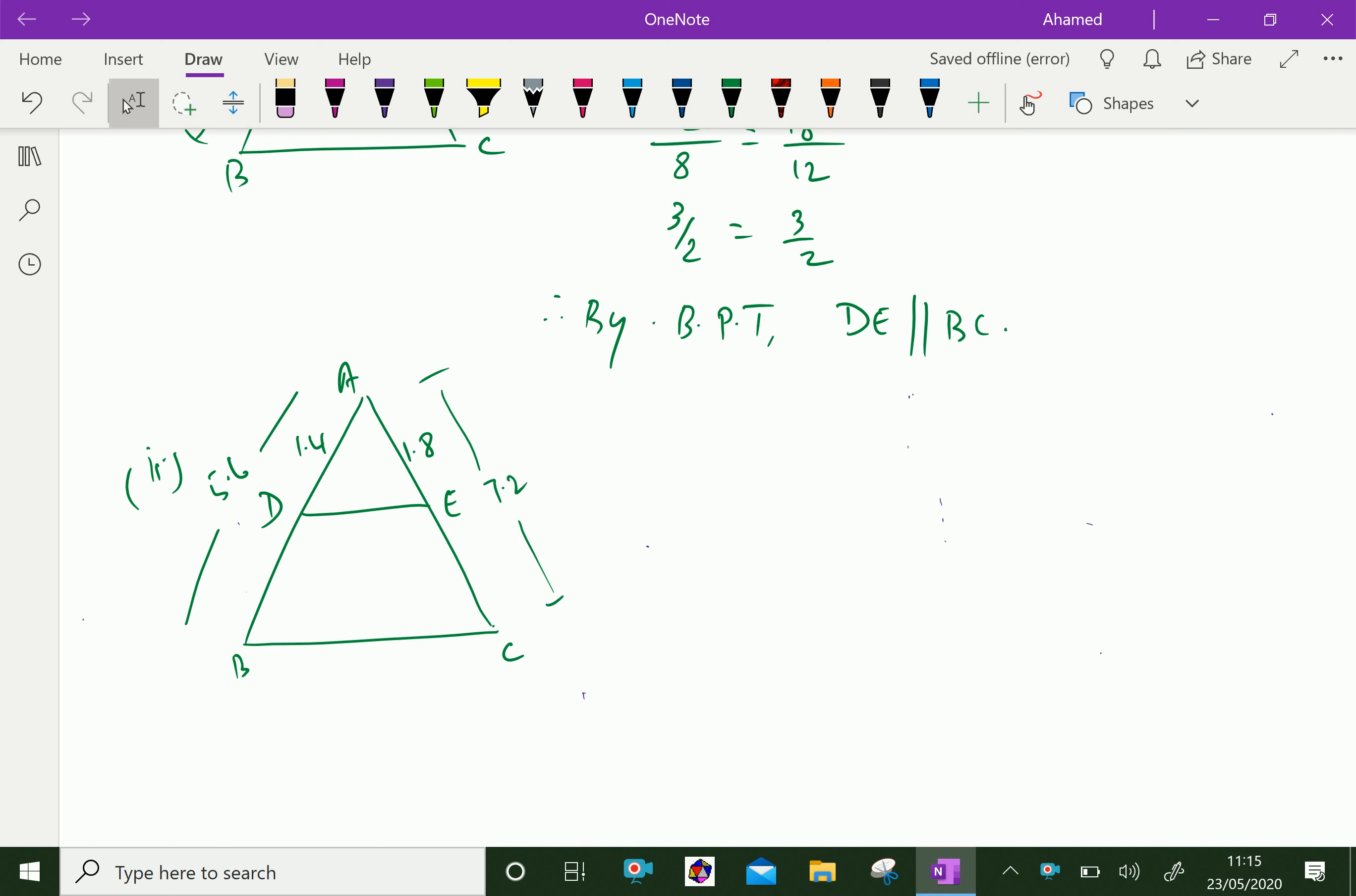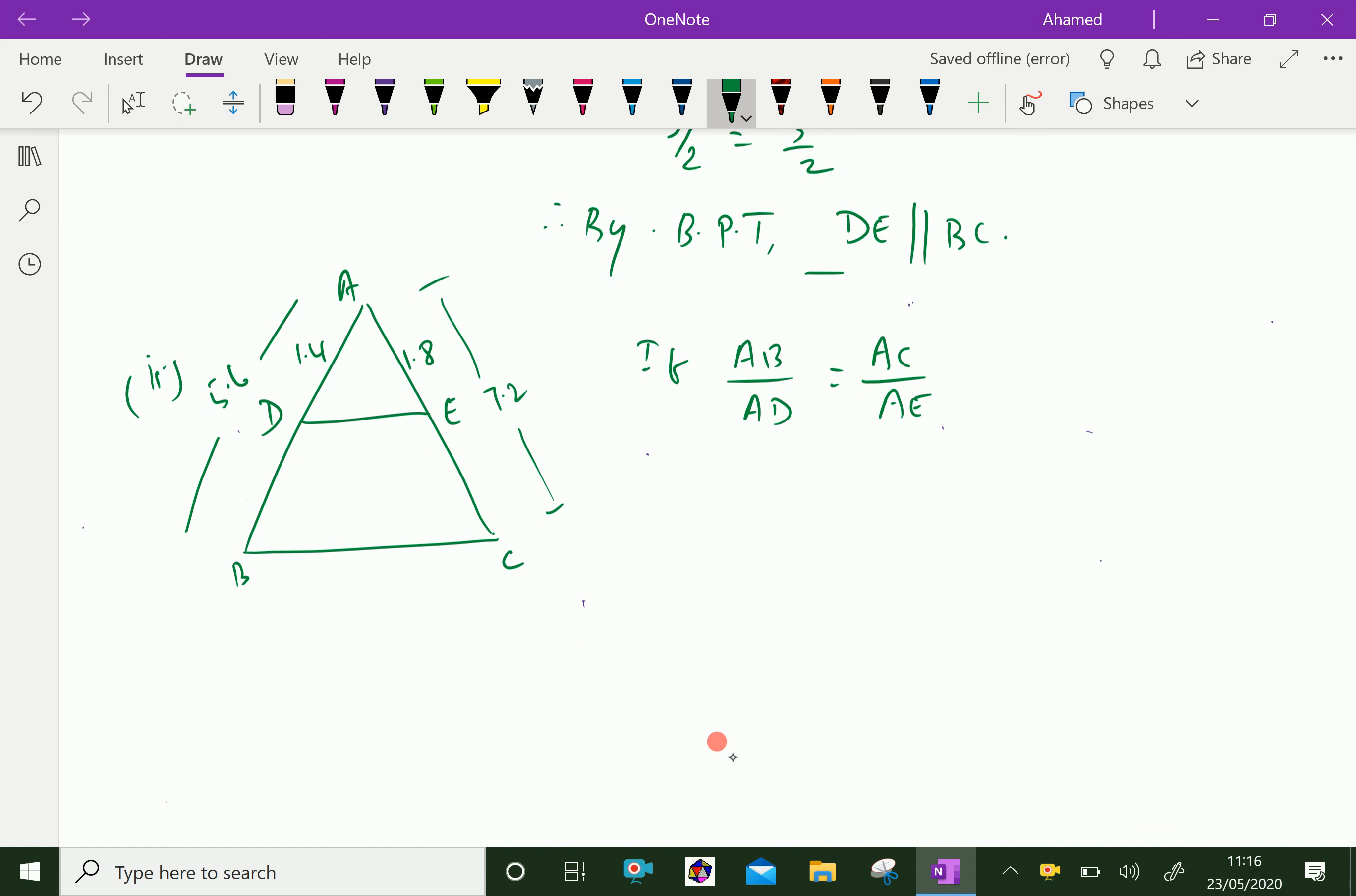Now, if AB over AD is equal to AC over AE. AB is 1.4, AD is 5.6, AC is 7.2 over 1.8. Now everywhere multiply by 10. The decimal will go.